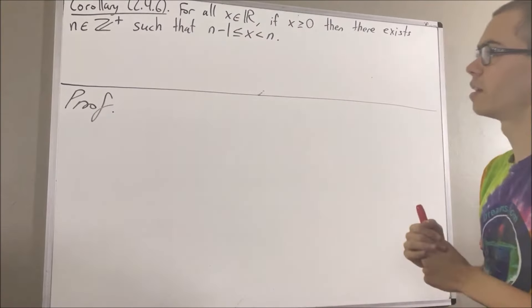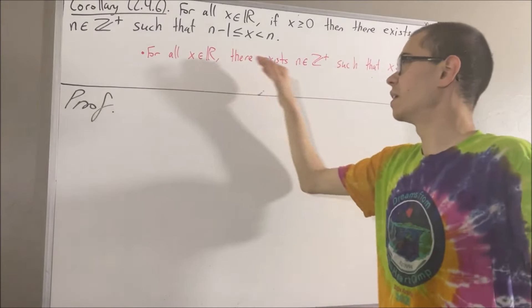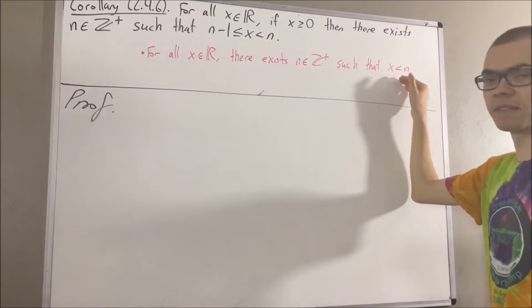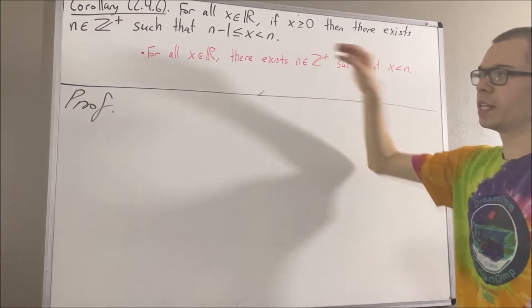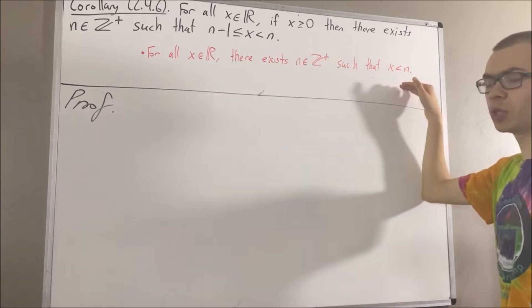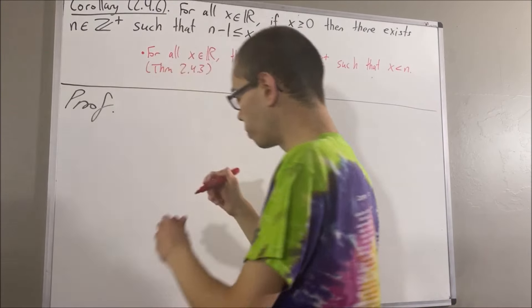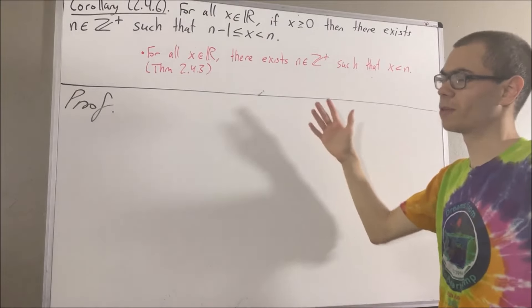Now in proving this corollary, we are going to rely on the following fact: for all real numbers x, there exists a positive integer n such that x is less than n. In the book we're referencing, this fact is referred to as Theorem 2.4.3. The book, by the way, is Intro to Real Analysis by Bartle and Sherbert, 4th edition.